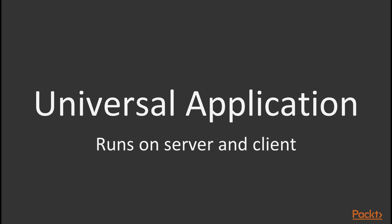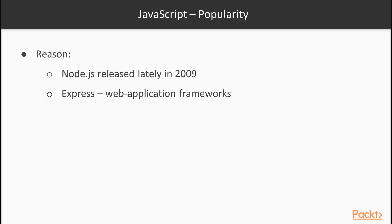A universal application is an application that can run both on the server and on the client side with the same code. Since Node.js was released in 2009, JavaScript has gained a lot of attention and popularity on the server side as well, thanks to web application frameworks such as Express.